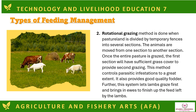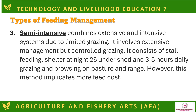Furthermore, rotational grazing lets lambs graze first and brings in ewes to finish up the feed left by the lambs. The third type is semi-intensive, a combination of extensive and intensive systems due to limited grazing. It involves extensive management but controlled grazing, consisting of stall feeding, shelter at night under a shed, and 3–5 hours of daily grazing and browsing on pasture and range. However, this method implies more feed cost.